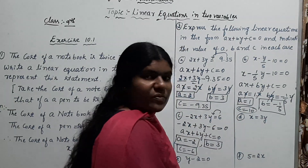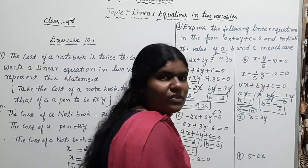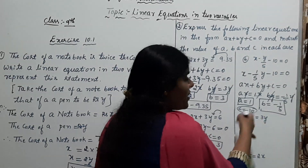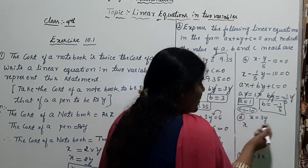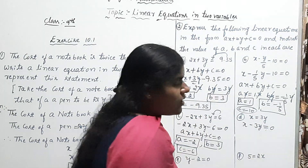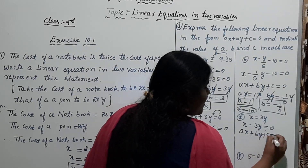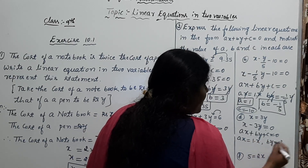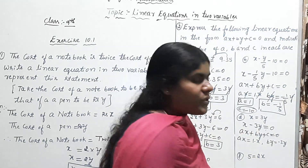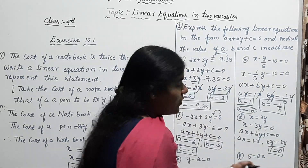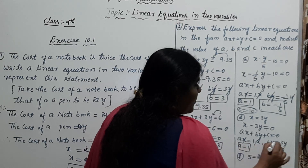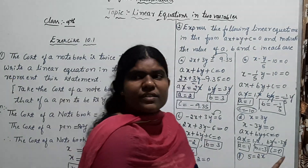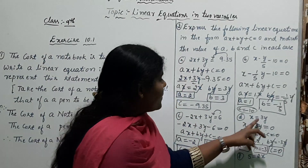The next question is x = 3y. In standard form three terms are needed, so transfer 3y to the left-hand side: x − 3y = 0. Comparing with AX + BY + C = 0: A = 1 (coefficient of x), B = −3 (coefficient of y), and C = 0 since the constant term is missing.